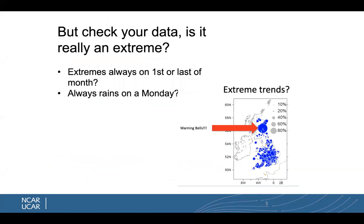Before we get started, we want to think a little bit about data. It's always important to check our data — is it really an extreme? Because many extremes rely on observations, there might be observational errors, things like extremes always on the first or last of a month, which could mean a rain gauge isn't checked until then. Always raining on a Monday might mean no one checked the rain gauge over the weekend. Over here we see a picture of precipitation trends over the United Kingdom, and one of them has a much different trend than the others — things to keep in mind as we examine data quality.